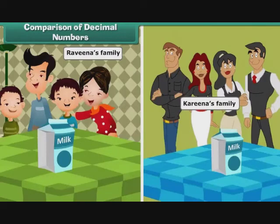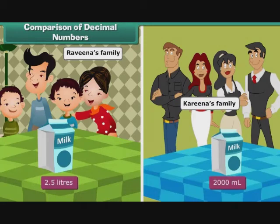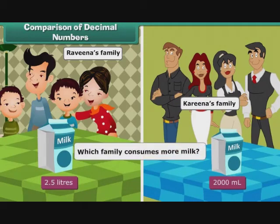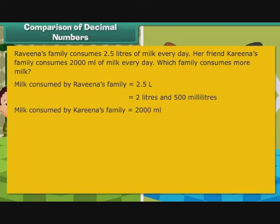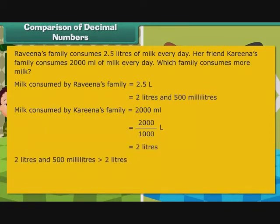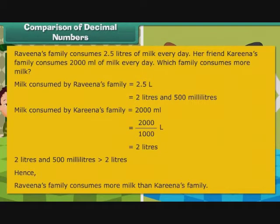Let us look at one more problem. Raveena's family consumes 2.5 litres of milk every day. Her friend Kareena's family consumes 2000 ml of milk every day. Which family consumes more milk? Milk consumed by Kareena's family is 2000 by 1000 litres, that is equal to 2 litres. 2 litres and 500 millilitres is greater than 2 litres. Hence, Raveena's family consumes more milk than Kareena's family.